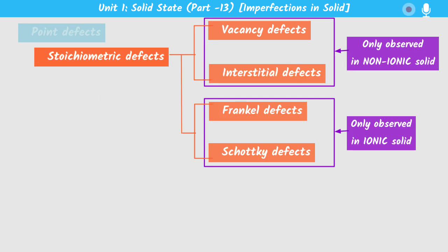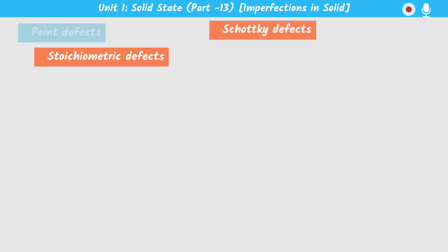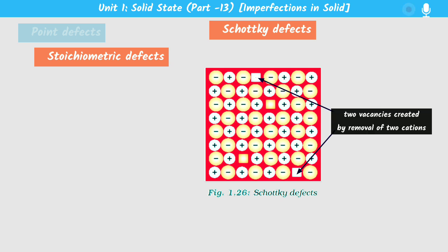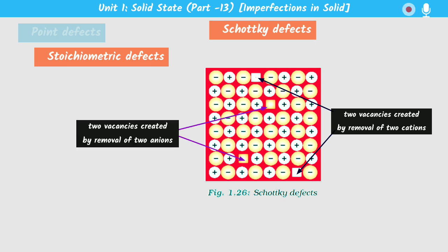Now coming to Schottky defects. Schottky defect is basically a type of vacancy defect shown by ionic solids. We already know that vacancy defects are observed in non-ionic solids, so if we observe vacancy defects in ionic solids, that vacancy defect is known as Schottky defect. For example, if we remove two positive ions from a crystal, we must also remove two negative ions at the same time to maintain electrical neutrality.